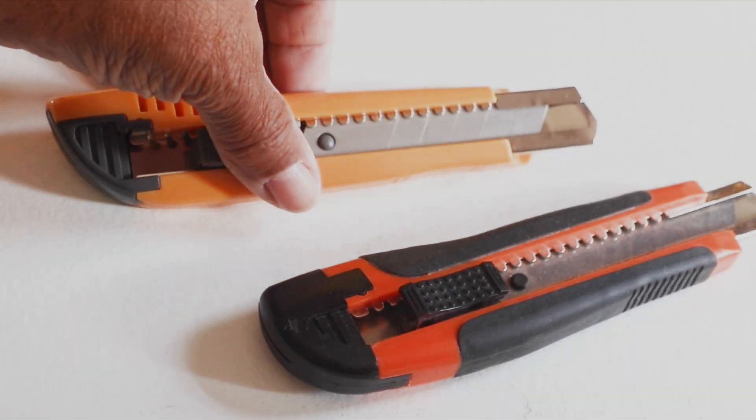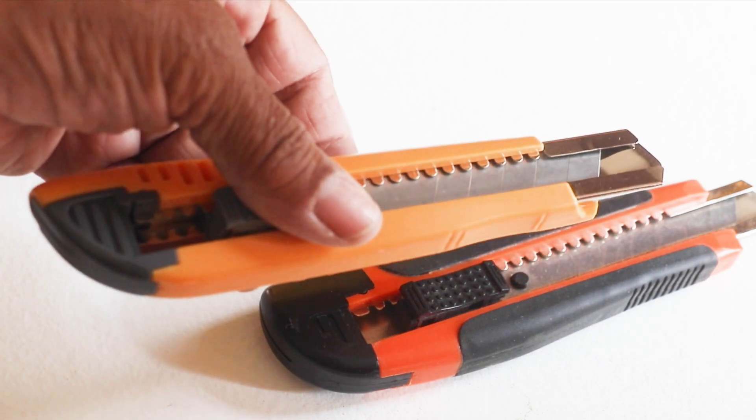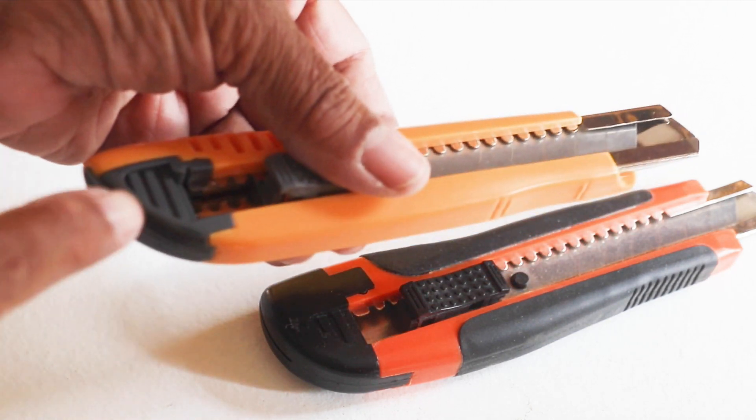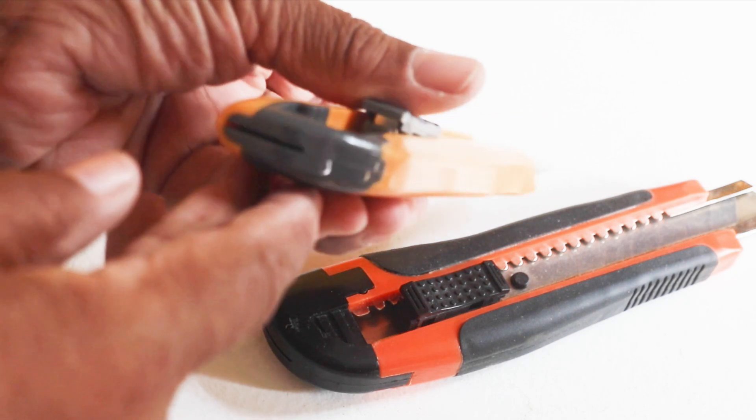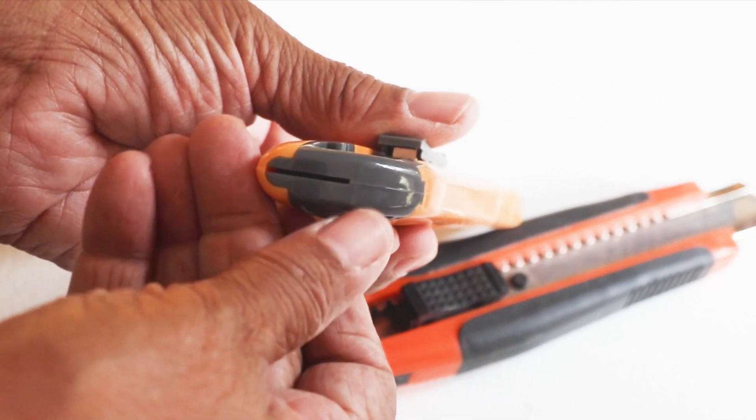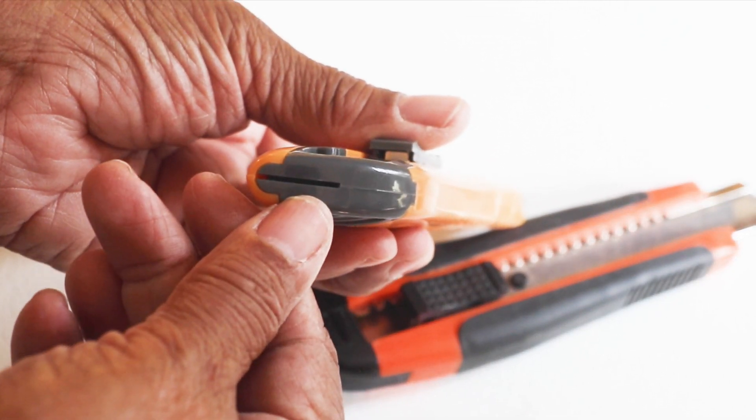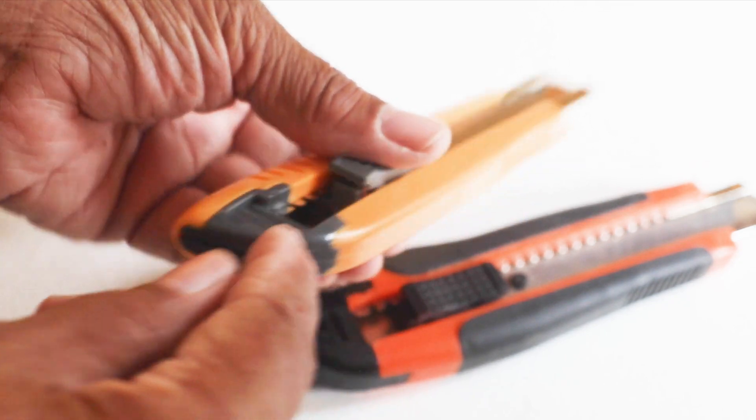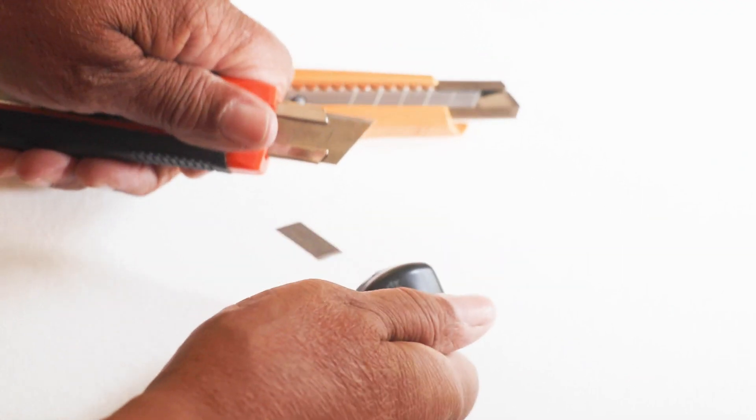How many of you know that there's a hidden tool in the tool? And it's located right here in the back of the handle. If you notice, there's a slot right there. And that slot is designed to snap off the blade.